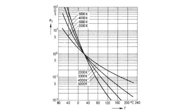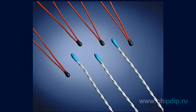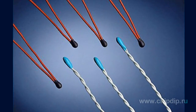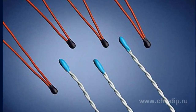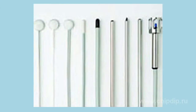In their essence, thermistors are semi-conducting ceramics. Conducting metal surfaces are welded to the casing of such ceramics, along with the terminals. Usually a finished product is covered with epoxy or glass. Thermistors commonly have a disc-like section and are shaped as rods of various sizes.